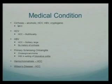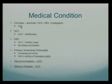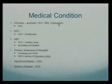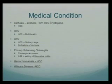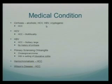Previous medical conditions — importantly, if patients have a history of cirrhosis and now have a liver lesion, you worry about hepatocellular carcinoma. The cirrhosis could be alcoholic, hepatitis C, hepatitis B, or cryptogenic. There is a terminology of cryptogenic cirrhosis, and the most common cause is now determined to be NASH — non-alcoholic steatohepatitis.